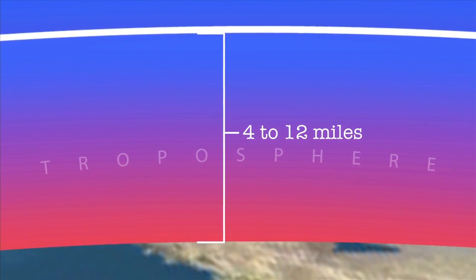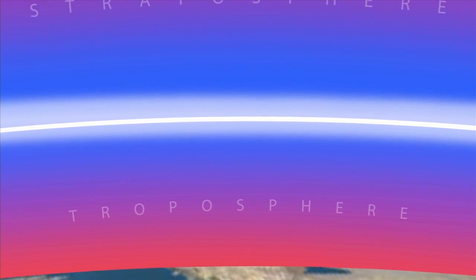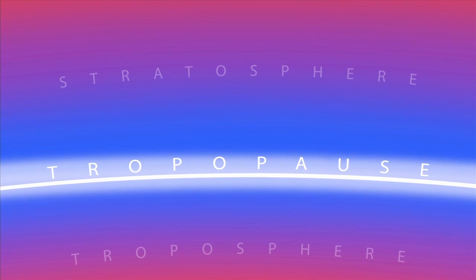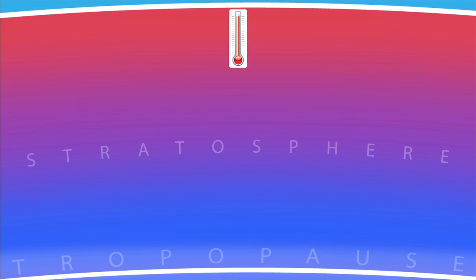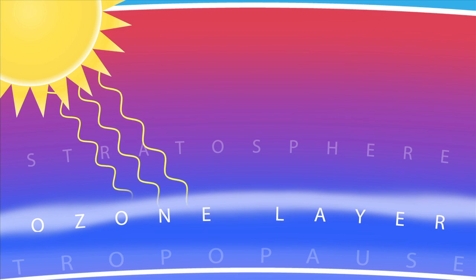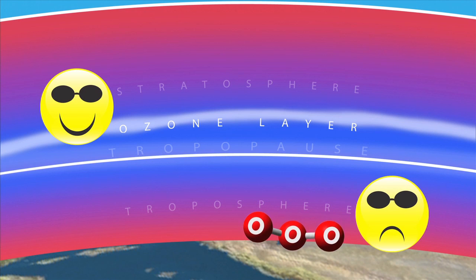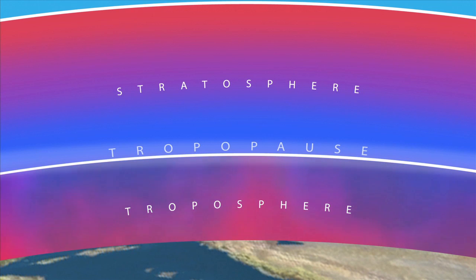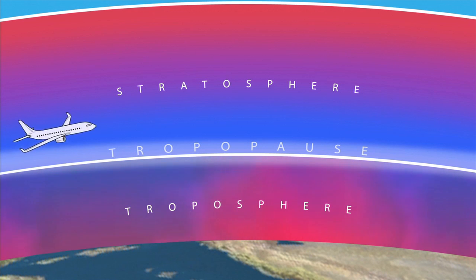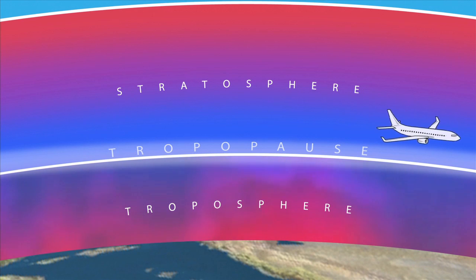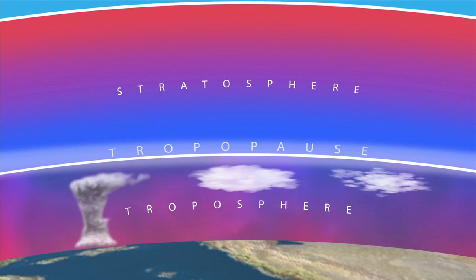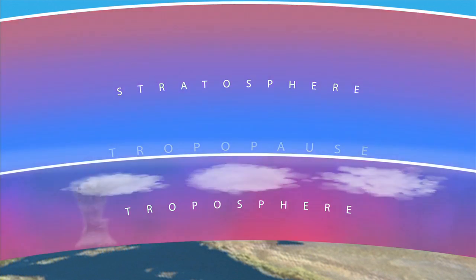The height of the troposphere can vary from 4 to 12 miles depending on location, season, and weather conditions. The boundary between the troposphere and the stratosphere is called the tropopause. Unlike the troposphere, temperatures in the stratosphere rise as you move up because it has the ozone layer absorbing solar radiation. That ozone high in the stratosphere is good for us. Ozone down in the troposphere near the ground, however, is bad for our health. The air in the stratosphere tends to be relatively stable, and commercial airliners often cruise just above the tropopause to take advantage of that calmer air.